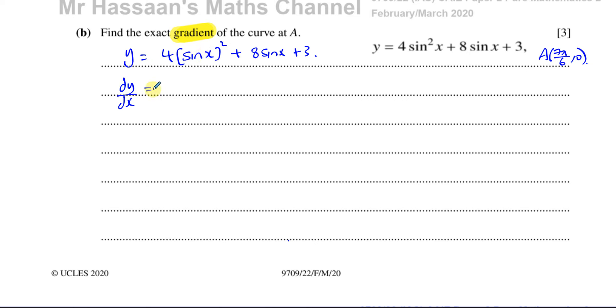So the main function here is something raised to the power of 2, which differentiates by multiplying by the power. So I have 4 times 2 times sine x to the power of 1. I'll just write it for now. And then I have to multiply by the differential of what's inside the function. If you differentiate sine x, you get cosine x. So I'm using the chain rule. So 2 times the coefficient 4, which is going to give me 8, times sine x, times the differential of sine x, which is cosine x.